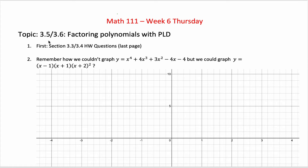In the previous two sections, we dealt with polynomials and essentially trying to graph them. And it'll turn out that in these next two sections, we're going to deal with polynomials and essentially try to graph them. So what's different? Why am I breaking these up into two different sections?